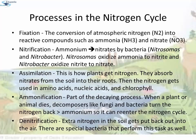Processes in the nitrogen cycle: First, nitrogen fixation — the conversion of atmospheric nitrogen (N2) into reactive compounds such as ammonia (NH3) and nitrate (NO3). Second, nitrification — the process by which ammonium is changed into nitrates by bacteria. Nitrates are what the plants can then absorb. The two groups of microorganisms involved are Nitrosomonas and Nitrobacter. Nitrosomonas oxidize ammonia to nitrite, and Nitrobacter oxidize nitrite to nitrate. Third, assimilation — plants absorb nitrates from soil into their roots, and the nitrogen gets used in amino acids, nucleic acids, and chlorophyll.